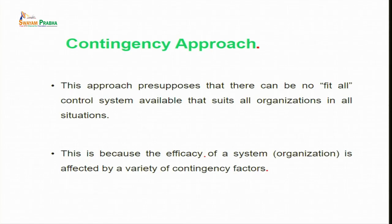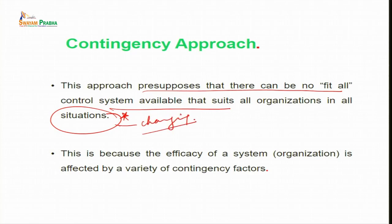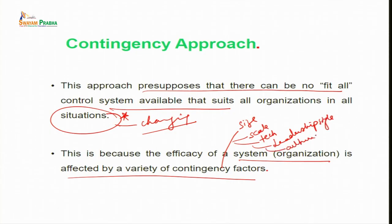The fifth is the contingency approach. According to this approach, organizations are open systems that should constantly adapt to changes in the internal and external environment. This approach presupposes that there can be no one-size-fits-all control system that suits all organizations in all situations, because situation is a critical factor which keeps changing. The efficacy of a control system is affected by contingent factors such as the size of the organization, scale of operations, technology adopted, leadership style, and the culture of the organization.